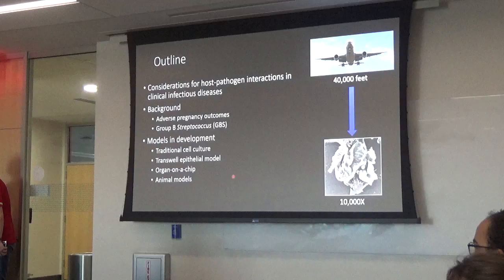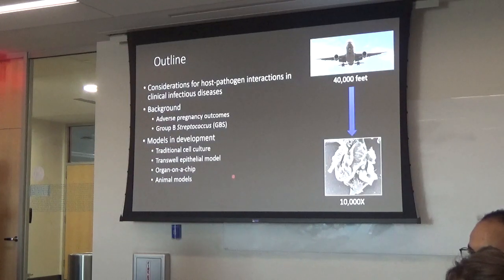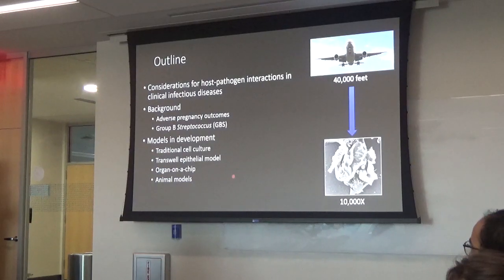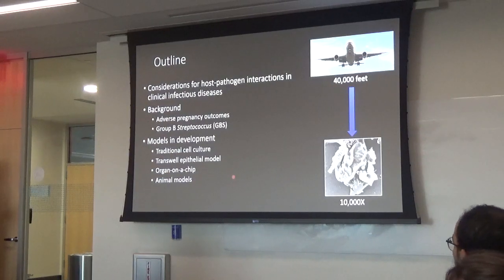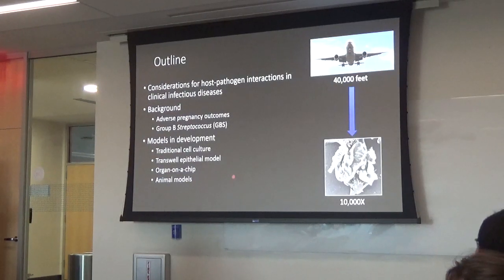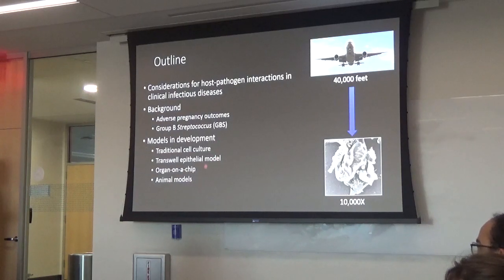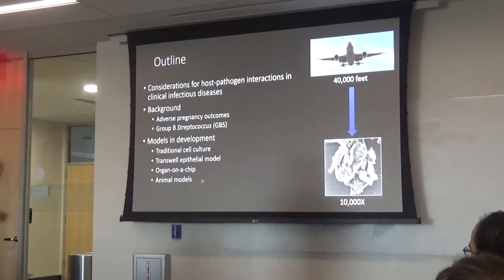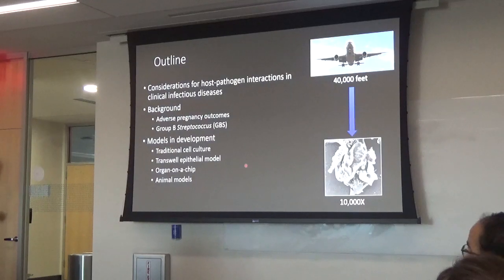Today I'm going to start with a broad overview, talking about how we think about clinical infectious diseases and host-pathogen interactions. We'll get background on the physiology of pregnancy and infections during pregnancy, then discuss different models — including cell culture models, transwell models, organ-on-a-chip, and animal models — along with the pros and cons of each when we try to draw conclusions from that work.